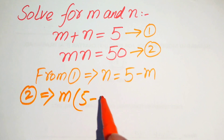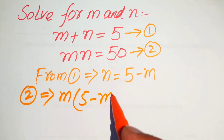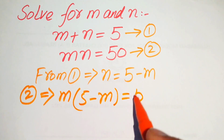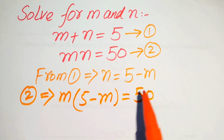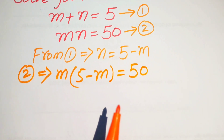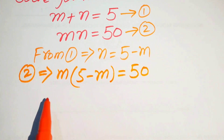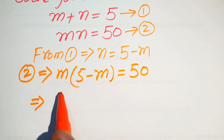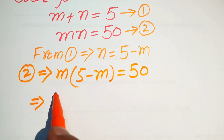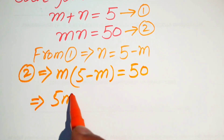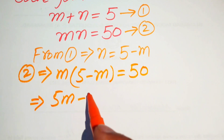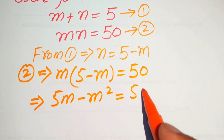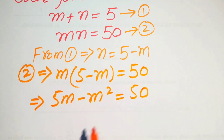We multiply m across both terms, giving us 5m minus m squared equals 50.